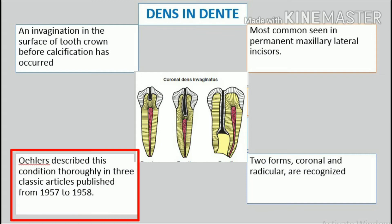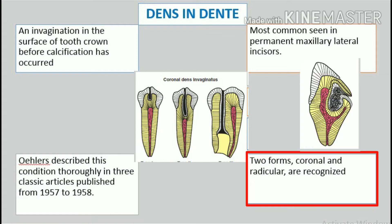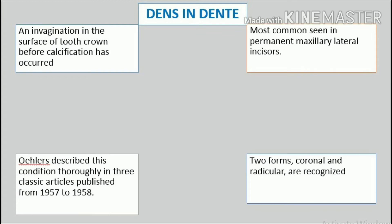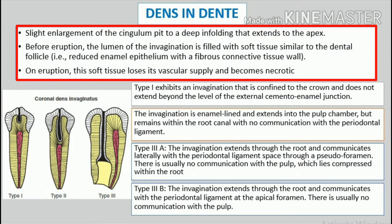Oehlers described this condition thoroughly in three classic articles published from 1957 to 1958. Two forms, coronal and radicular, are recognized. Coronal dens invaginatus: teeth affected most often include the permanent lateral incisors, central incisors, premolars, canines, and molars.